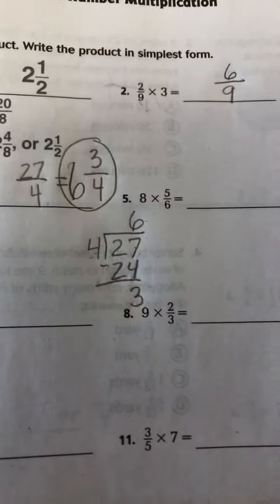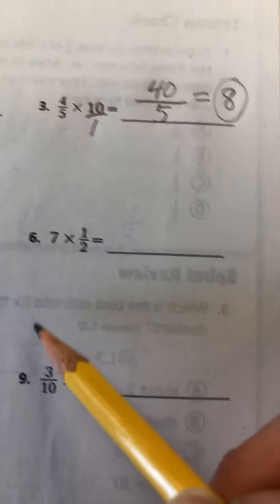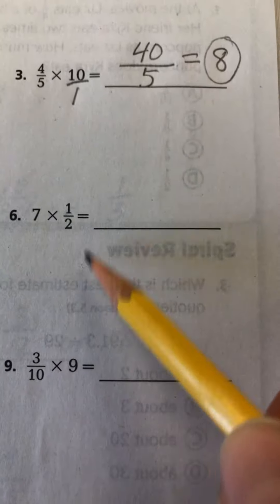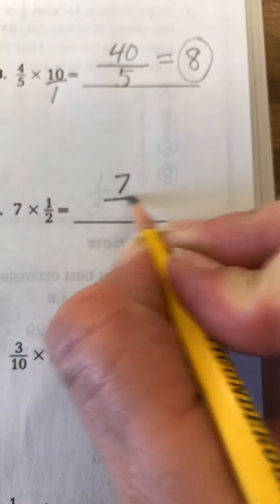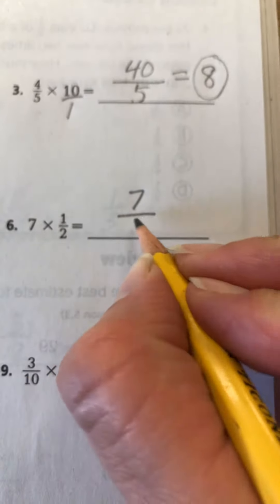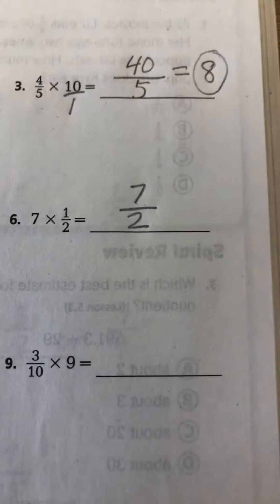Let's do one more. So we have 7 times a half. 7 times 1 is 7. Denominator stays a 2. So I have 7 halves or 7 over 2. Again, it's improper.